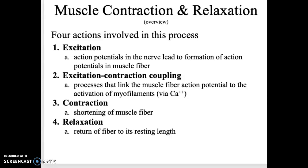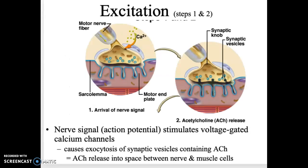In muscle contraction and relaxation there are four primary steps, each with its own little pieces. First is excitation — this is the nervous system part. Step two is excitation-contraction coupling, which is how we connect the nervous system to the muscular system. Contraction is the actual shortening of the muscle fiber, not the filaments. And then relaxation is returning back to normal.